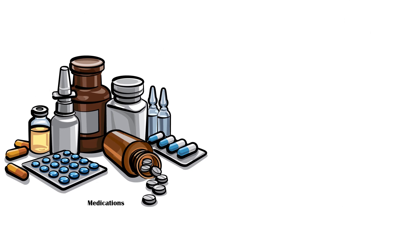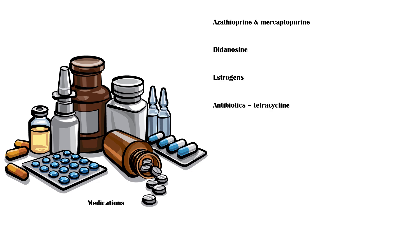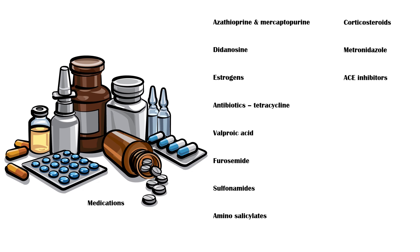Certain medications can also cause acute pancreatitis. Some of them include the following: azathioprine and mercaptopurine, didanosine, estrogens, antibiotics such as tetracycline, valproic acid, furosemide, sulfonamides, aminosalicylates, corticosteroids, metronidazole, and ACE inhibitors.